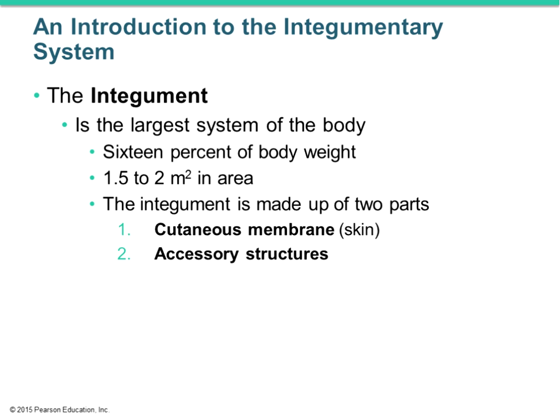There are two parts we're going to be looking at. Primarily we'll focus on the cutaneous membrane, which is the skin — we talked about membranes last time — but also accessory structures like hair, nails, and glands, which tag on to what we talked about with the histology chapter.